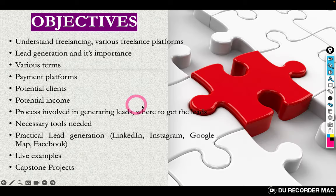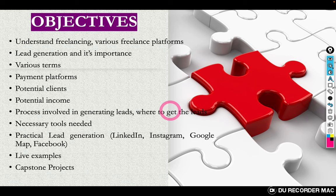The objectives: at the end of this presentation, you should be able to understand what freelancing means and discuss the various freelance platforms, so that when you're among freelancers you understand what they're talking about. You should understand what we mean by lead generation and its importance, the various terms you'll come across as a lead generation specialist, and the various methods of payment — because the essence of learning this skill is to earn remotely. We'll also look at potential clients and potential income.